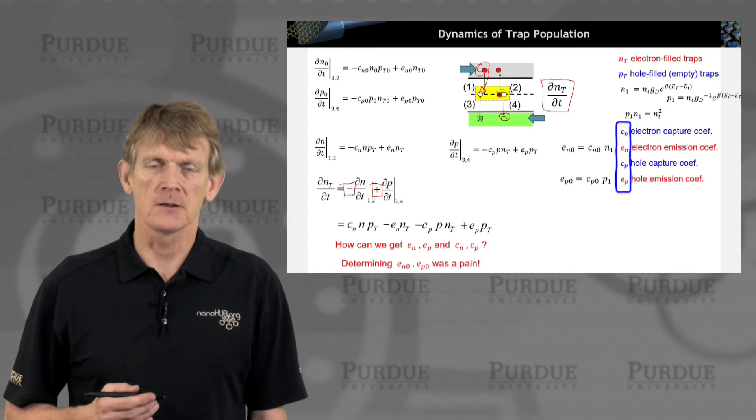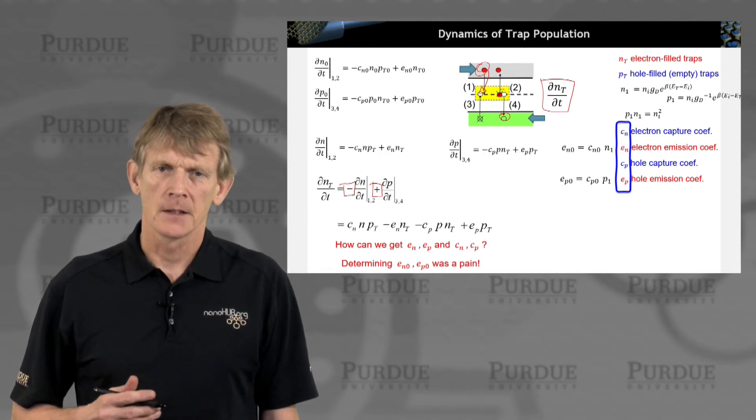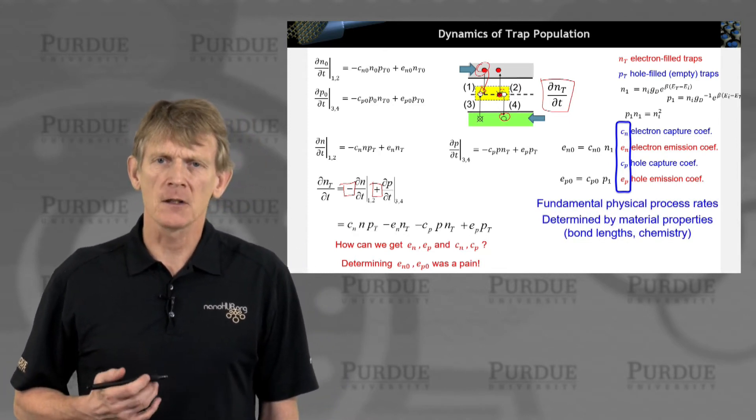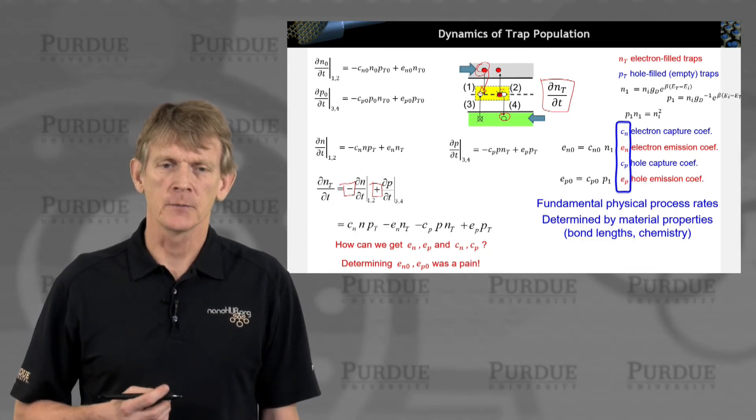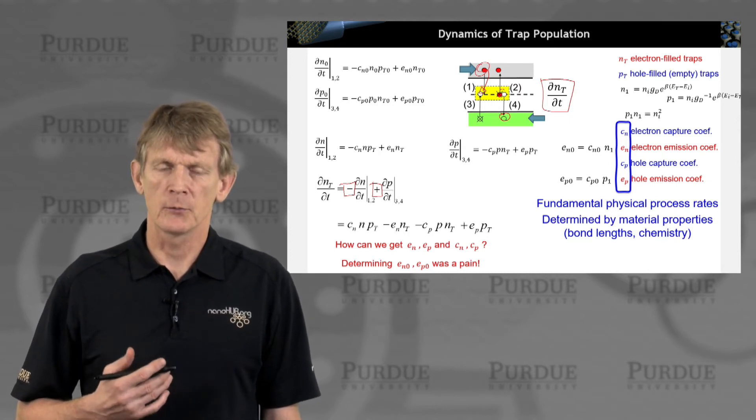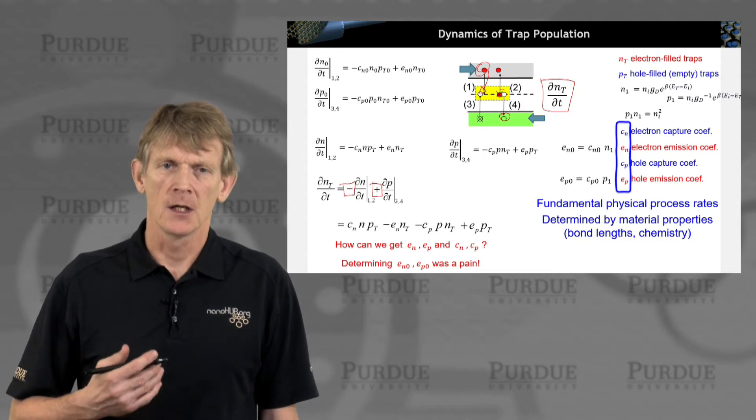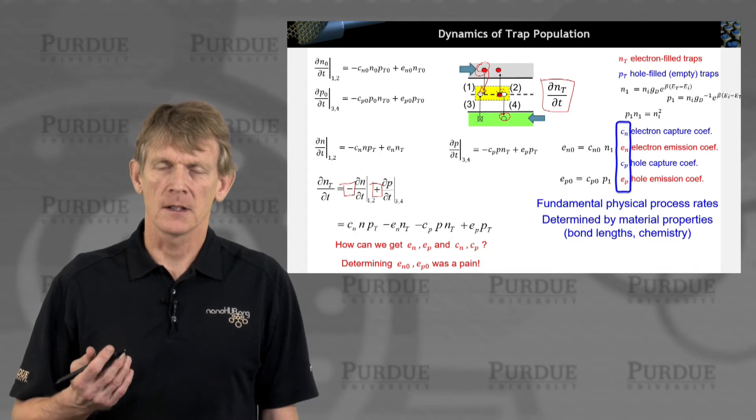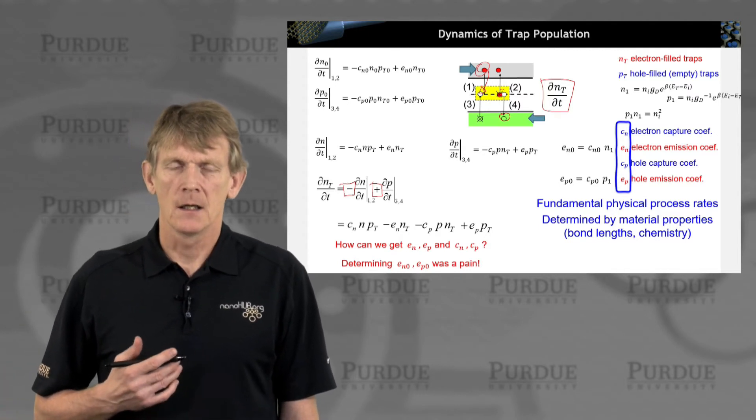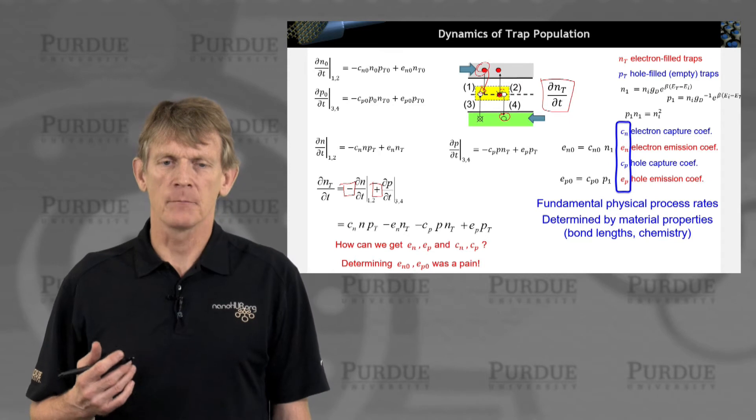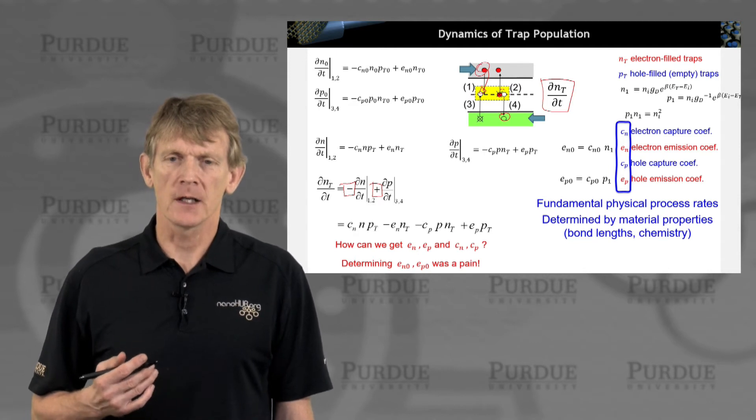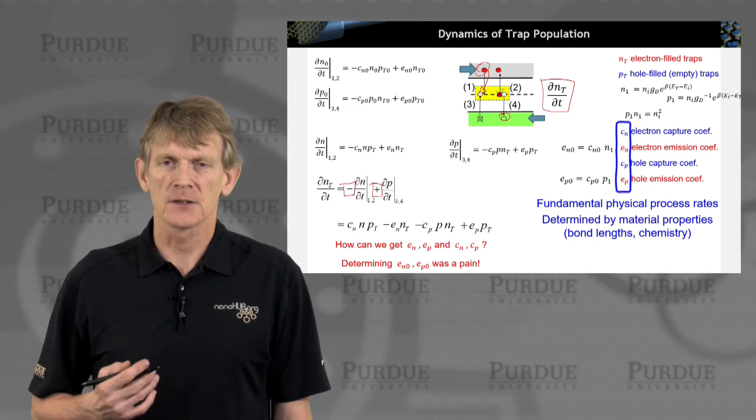We had a whole section on deriving a relationship between these coefficients. Now these coefficients, emission and capture, are physical properties of the system. They depend on a foreign atom, a trapped atom, sitting in the semiconductor, providing a trapped state, being able to take an electron or emit an electron. They are established in the chemistry. We're not anticipating changing bond lengths or moving these traps around by looking at adding more electrons or taking electrons out of the system. The system is physically stable.